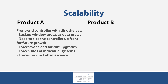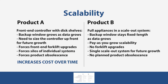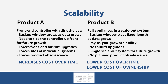Scalability: Product A's front-end controller with disk shelves causes the backup window to grow as data grows, requires sizing the controller upfront for future growth, forces forklift upgrades, forces silos of individual systems, and forces product obsolescence — this increases costs over time. Product B's full appliances in a scale-out system keep the backup window fixed-length as data grows, with pay-as-you-grow scalability, no forklift upgrades, a single scale-out system for future growth, and no planned product obsolescence — lowering cost over time and total cost of ownership.